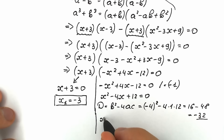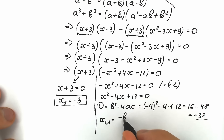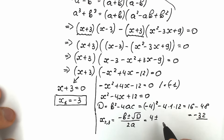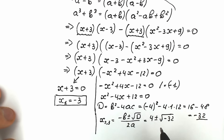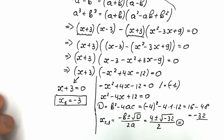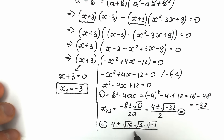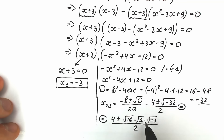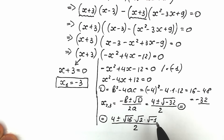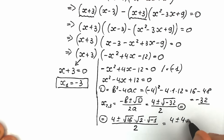Let's find these complex roots. x second and third equals minus b plus or minus square root of the discriminant, all over 2a. That equals 4 plus or minus square root of minus 32, all over 2. We can express minus 32 as 16 times 2 times minus 1, and split it into three square roots: square root of 16 times square root of 2 times square root of minus 1. Square root of 16 equals 4, and square root of minus 1 equals i. So we get 4 plus or minus 4 root 2 times i, all over 2.